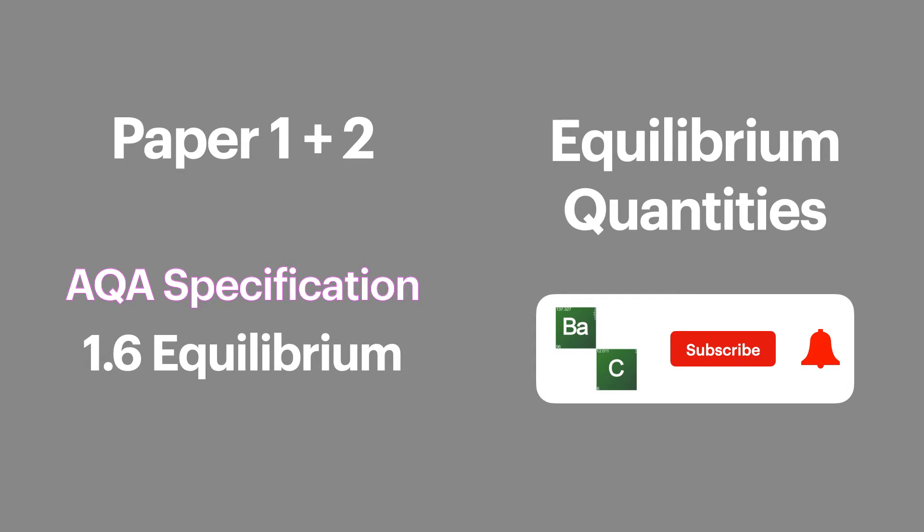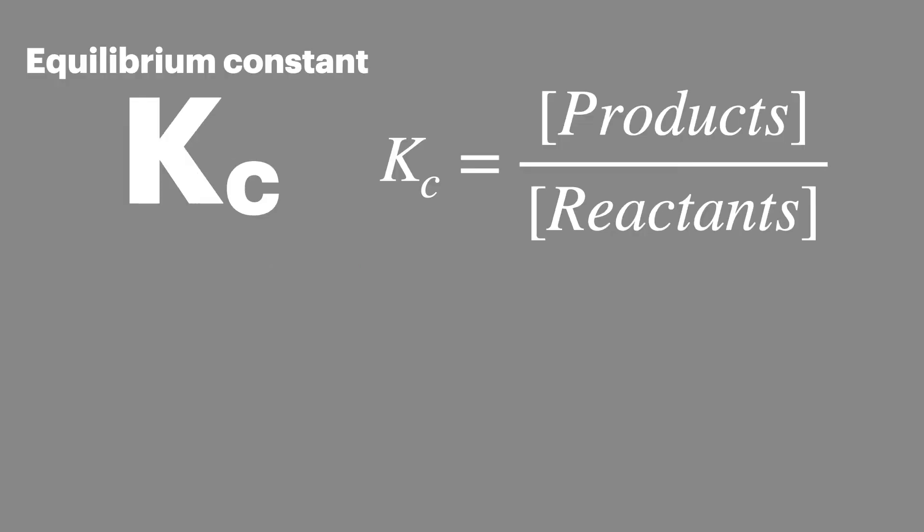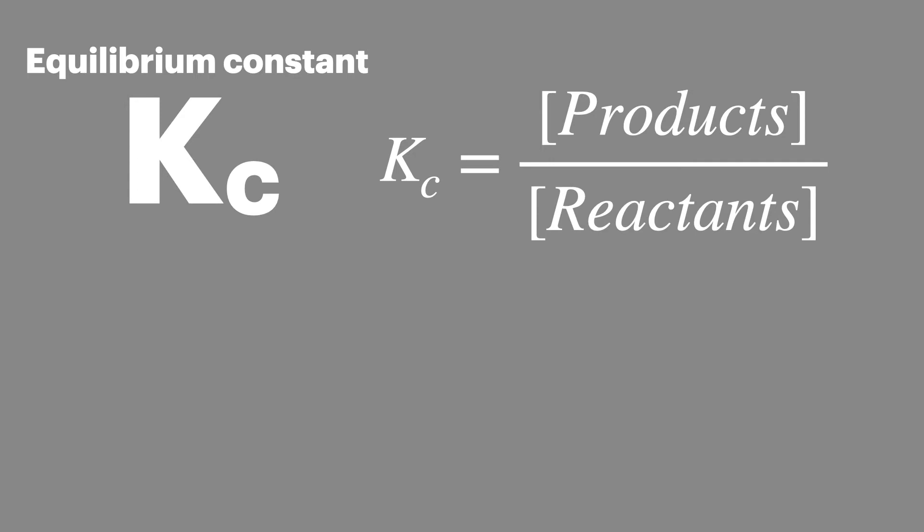This is AQA topic 1.6 equilibria and can appear on papers 1 and 2 of your final exams. In a previous video we've looked at the Kc expression and how we can calculate the value of Kc when given the concentrations present at equilibrium.